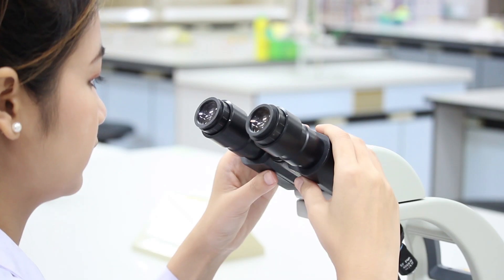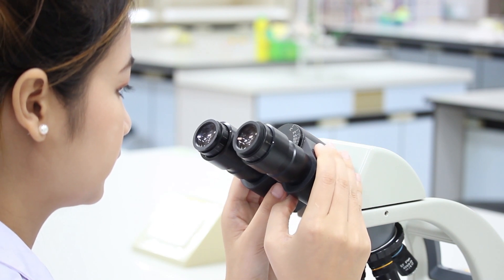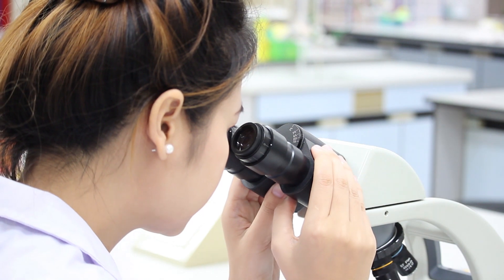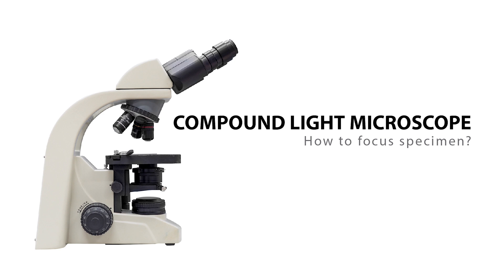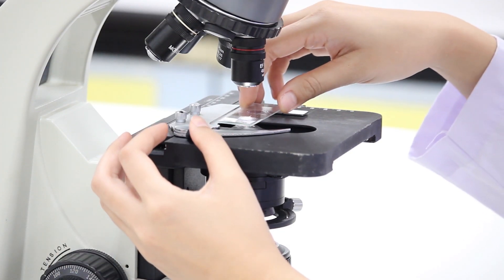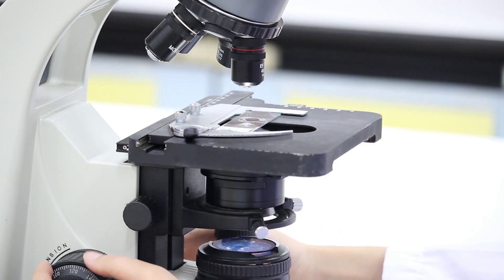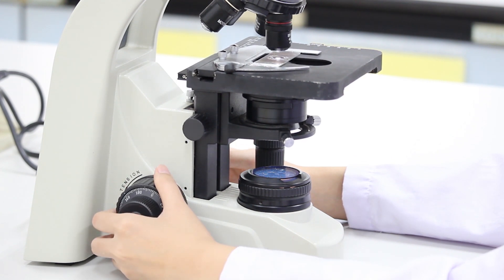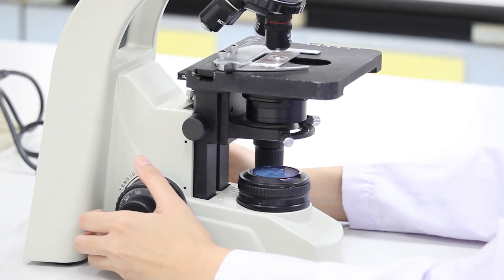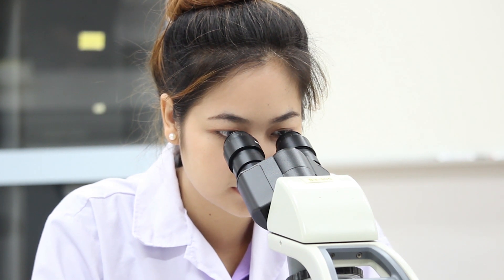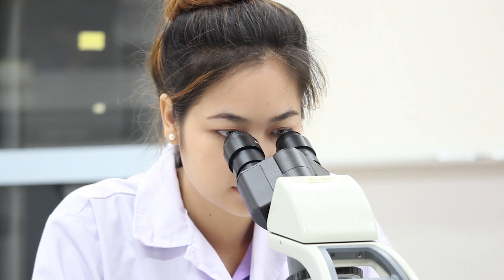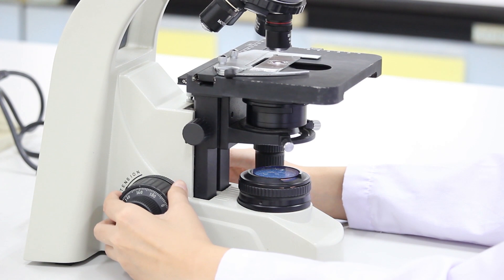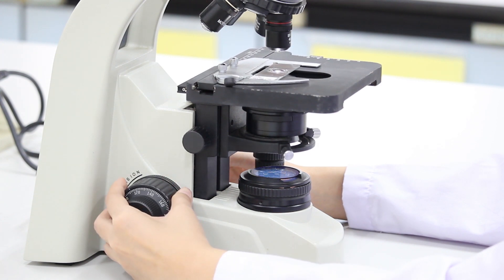Next, adjust the distance between the eyepieces to match the distance between your pupils. To focus a specimen, start with the lowest magnification of 4x. Place a microscope slide on the stage, then rotate the coarse adjustment knob to move the stage to within 1 cm of the objective. Look through the eyepieces with both eyes open, then rotate the coarse adjustment knob to move the stage down until the image comes into focus.